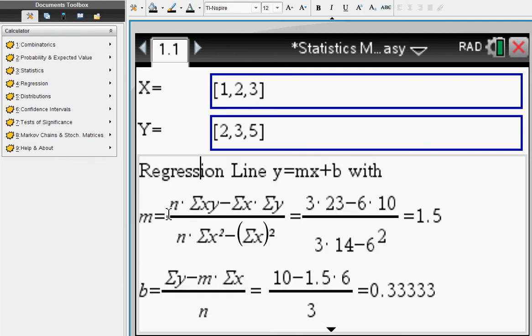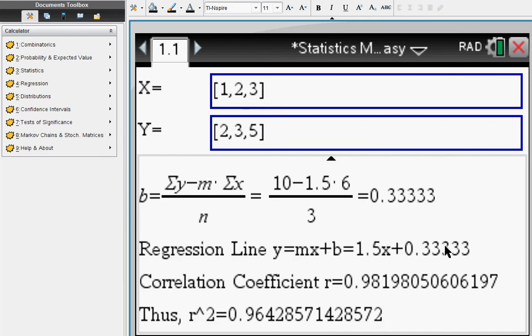We are using the handy dandy formula for the slope m and for the y-intercept b, step by step, to arrive at your linear regression line. Correlation coefficient is given to you as well.